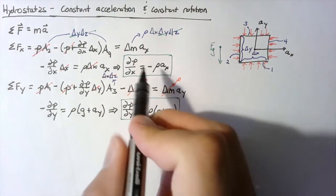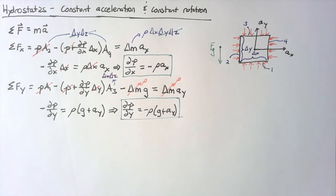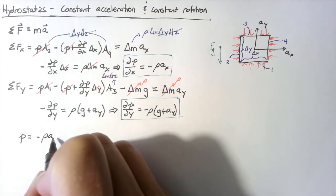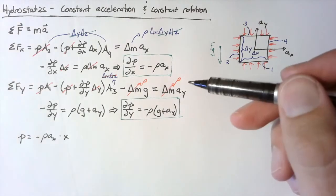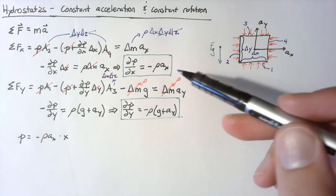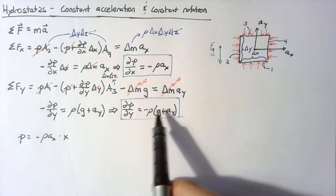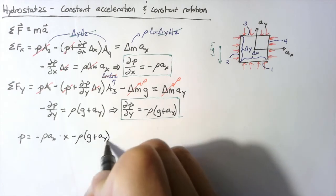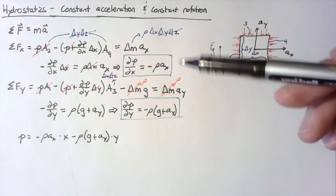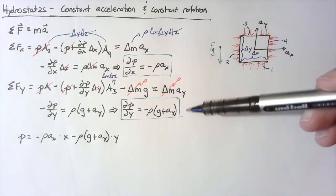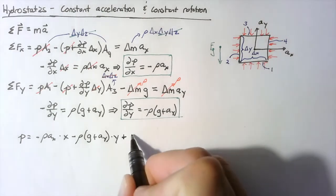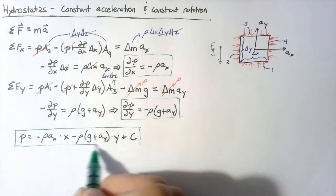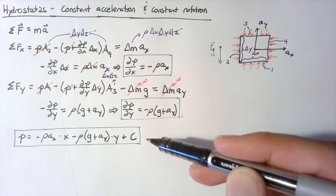Now we'll take these two equations and integrate both of them. Integrating negative rho a_x gives us p equal to negative rho times a_x multiplied by x. Normally we'd add a constant, but this can actually be a function of y. So the function of y we add in is the integral of the y equation with respect to y — we subtract off rho(g + a_y) multiplied by y. Everything else can only be a constant. So for acceleration in any direction, pressure is going to vary linearly in x and linearly in y.